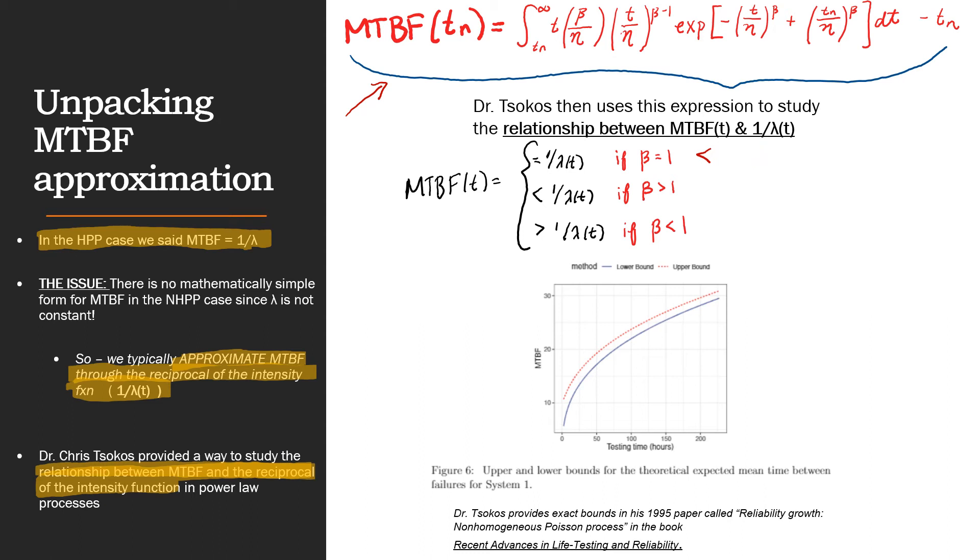Now that we have this relationship between MTBF and the approximated MTBF, we can explore how Dr. Chris Tsokos provided bounds for the approximation of MTBF. Dr. Chris Tsokos provides exact bounds in his 1995 paper called Reliability Growth Non-Homogeneous Poisson Process in the book Recent Advances in Life Testing and Reliability, which we have cited here. If we use our example system 1, coming from the three hypothetical systems that we've shown throughout this course. So, if we use our example system 1 that is undergoing reliability growth, we find that the maximum likelihood estimate of β for system 1 is equal to 0.64 or approximately 0.64.